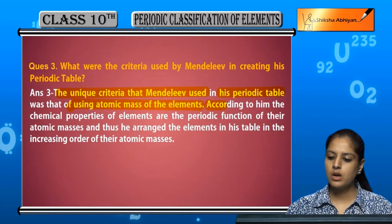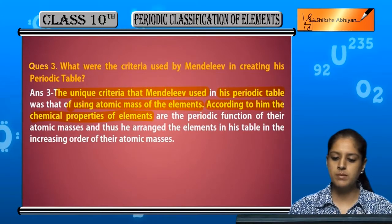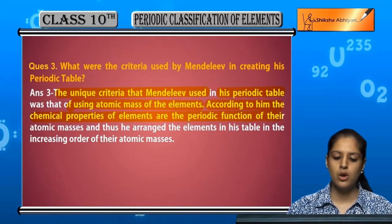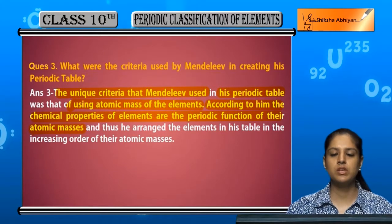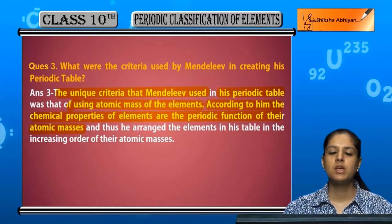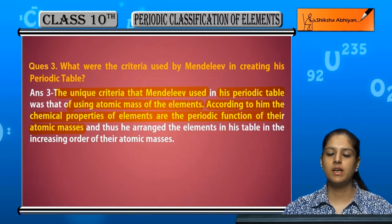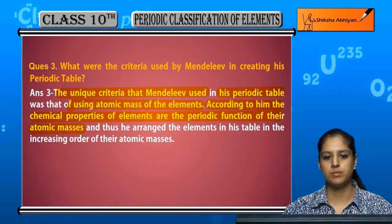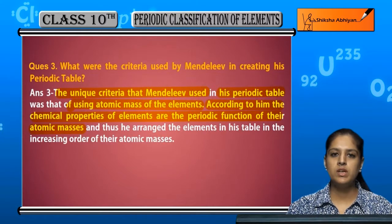According to Mendeleev, the chemical properties of elements are the periodic function of their atomic mass. So he stated that the chemical properties of elements repeat periodically as a function of their atomic mass.